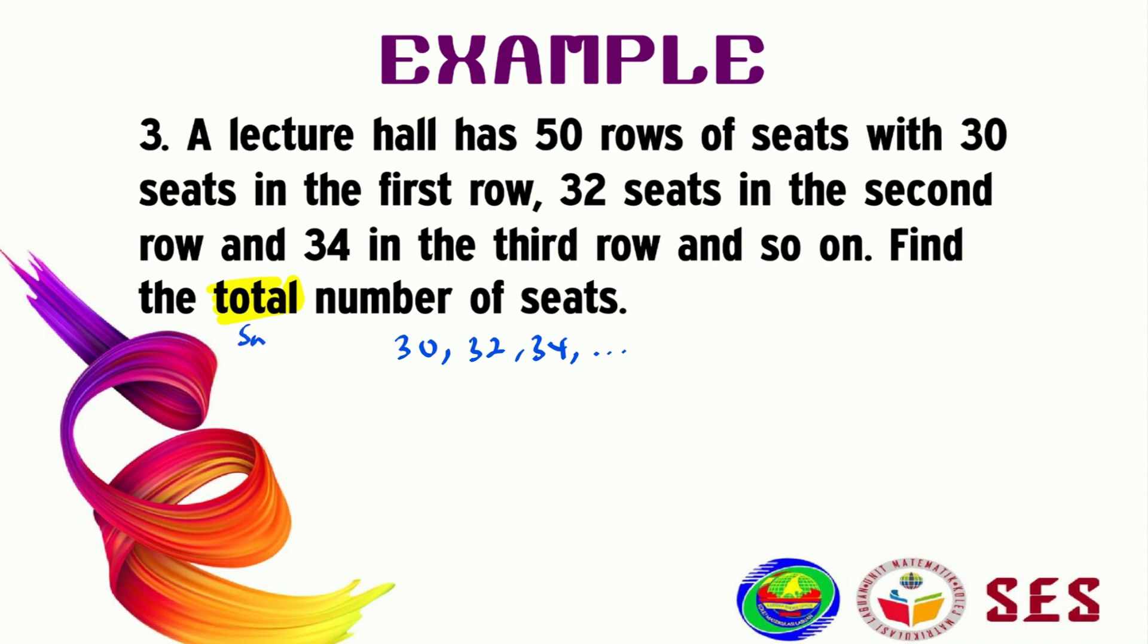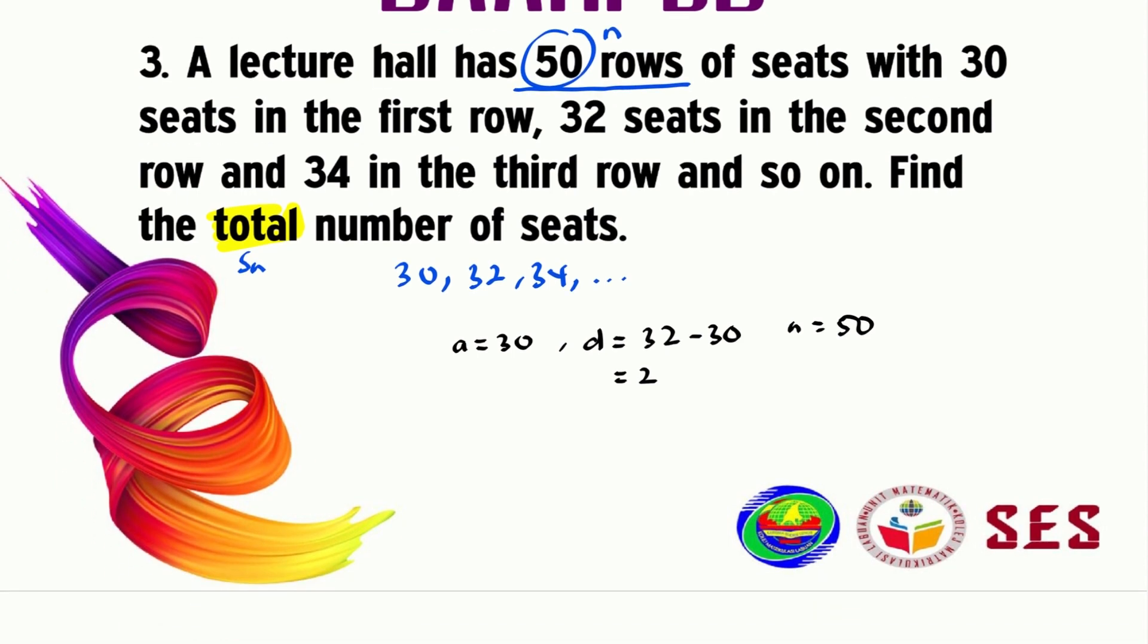Not Tn for this case. This 50 rows here actually tells us that this is our n value. So what we have here is a equals 30, and d equals 32 minus 30, which should give you 2. Our n in this case is the total number of rows, which is 50. We need to calculate the total number of seats in this particular lecture hall.